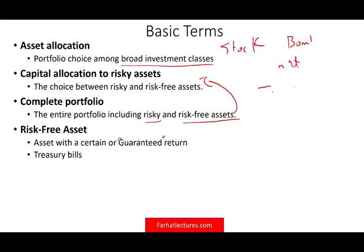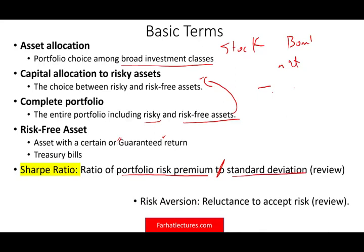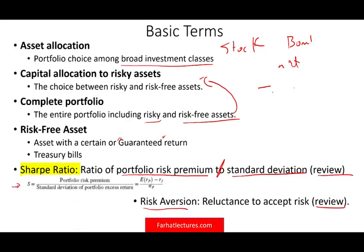There are two other terms you need to be familiar with for this session. The first is the Sharpe ratio — the ratio of portfolio risk premium divided by the standard deviation. This should be a review for you. We also need to look at risk aversion, which is the reluctance to accept risk, computed using the symbol A as the risk premium divided by the variance. I'm mentioning these because we're going to be using them at the end when we select how to allocate risky versus risk-free assets.